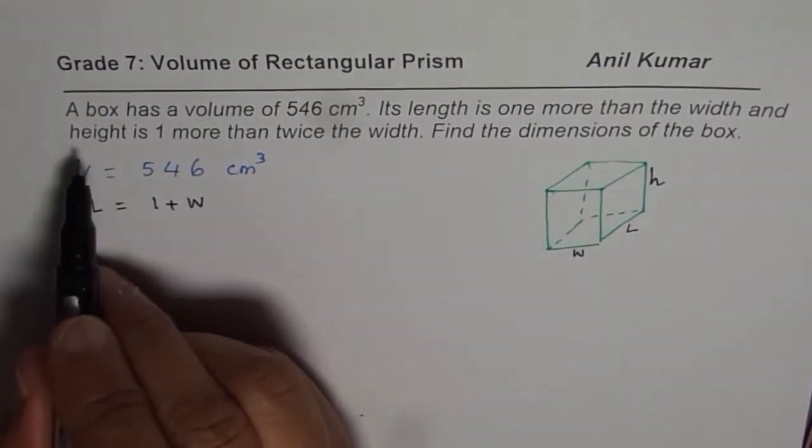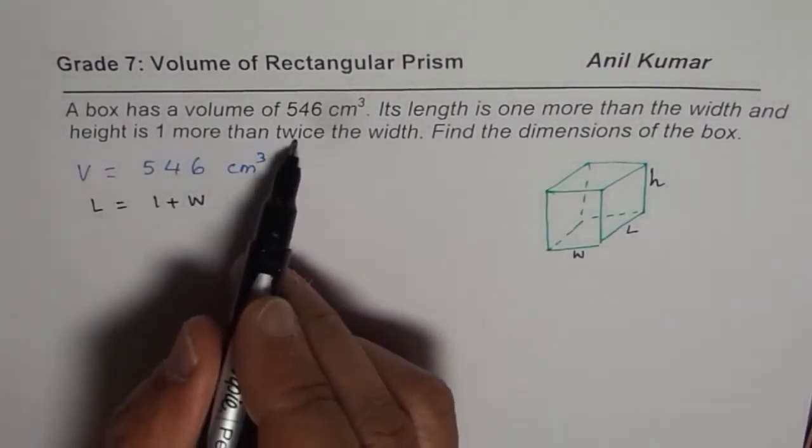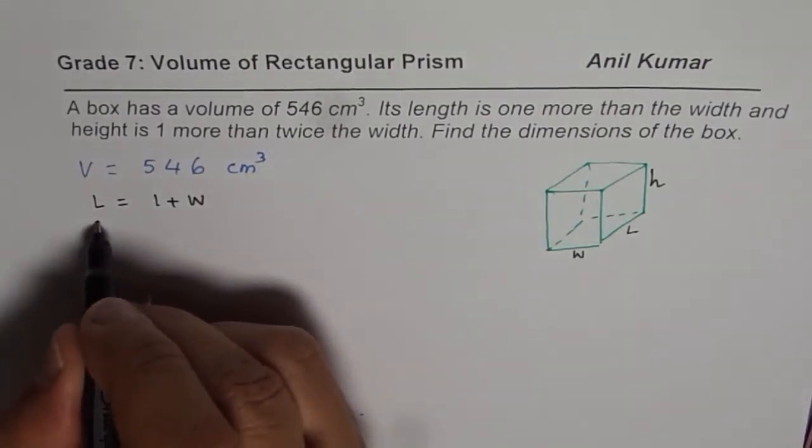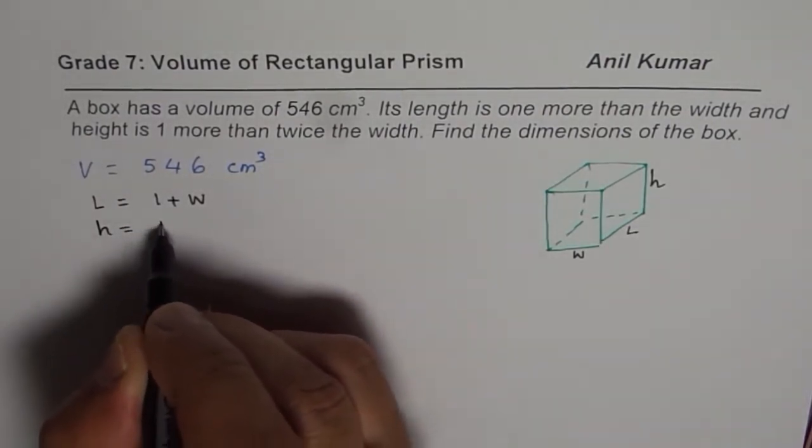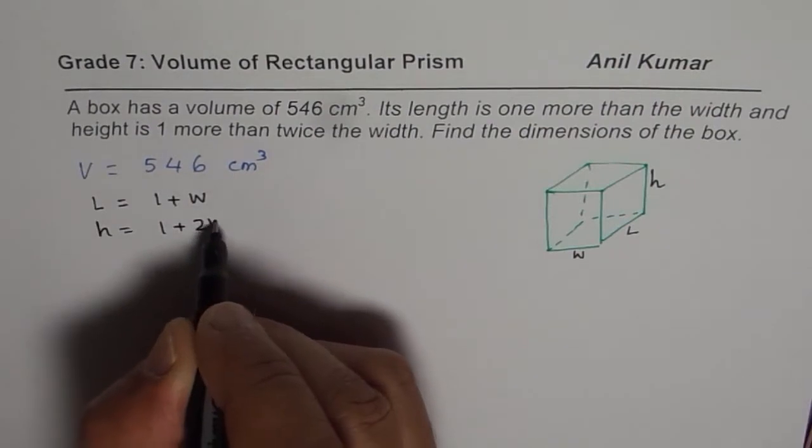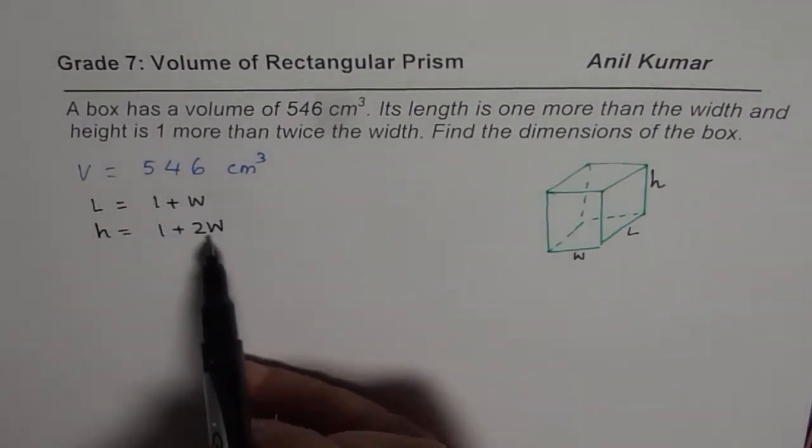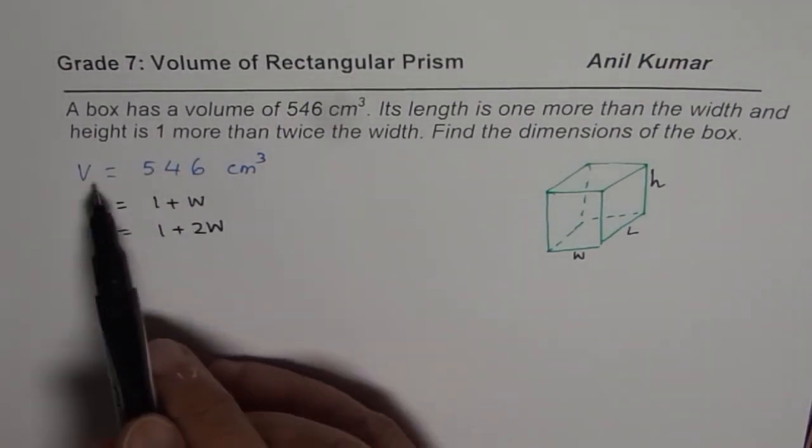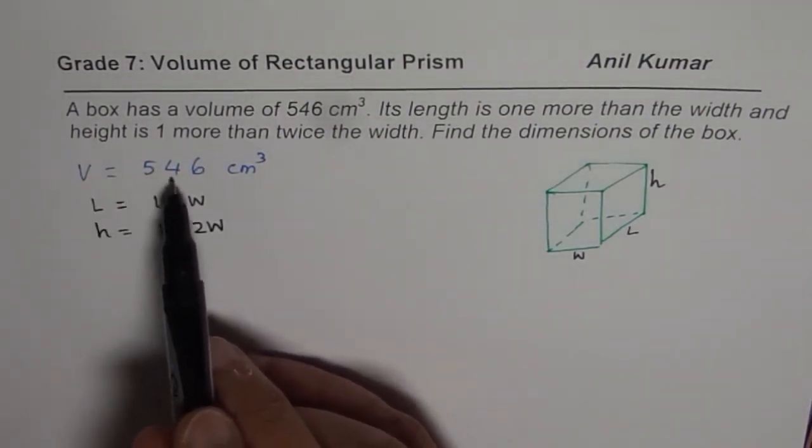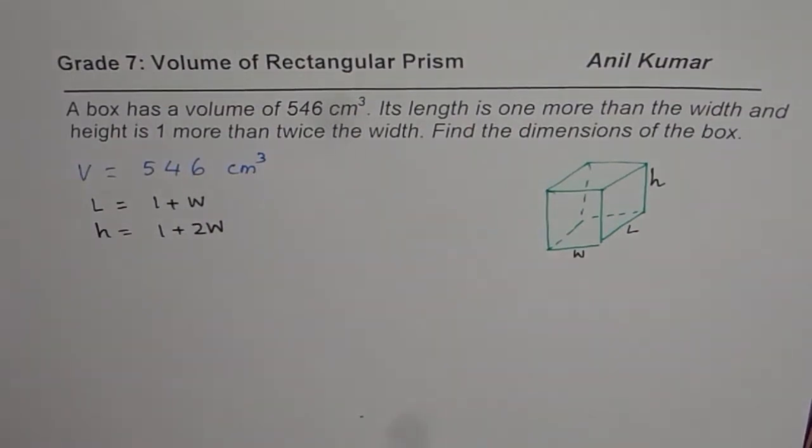And height is one more than twice the width. So h is one more than twice the width. So that is the kind of relation which we know. So what are these numbers which can fit in and give you a volume of 546? That is indeed difficult.